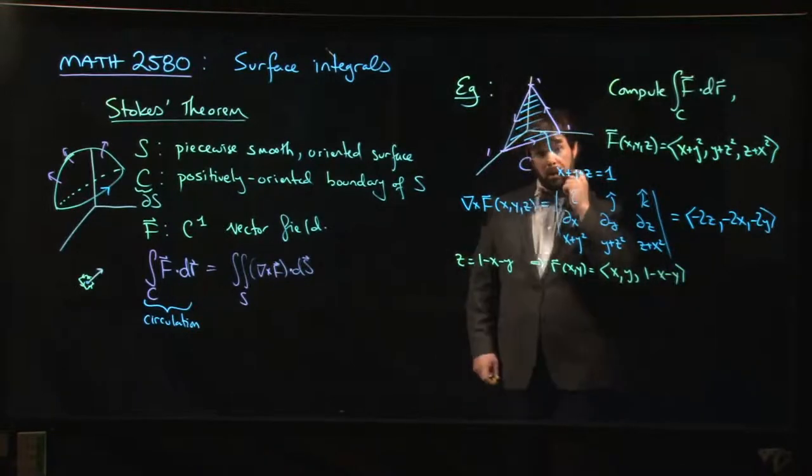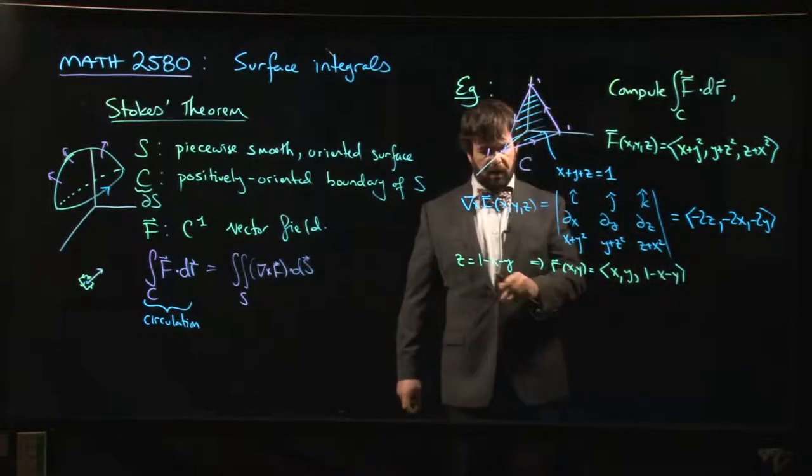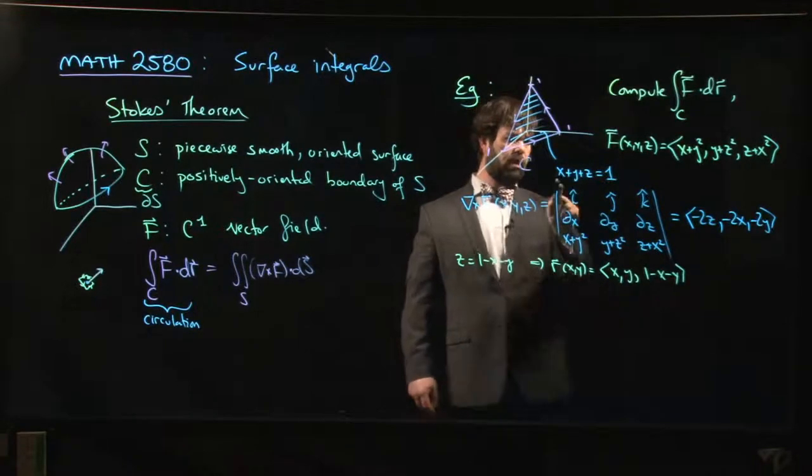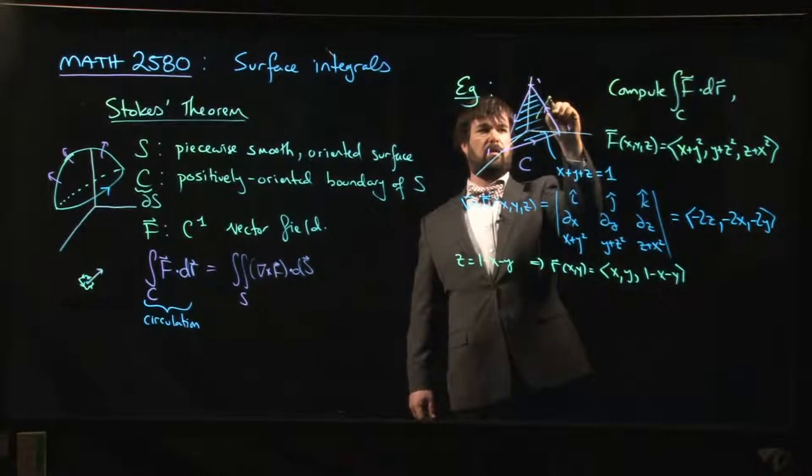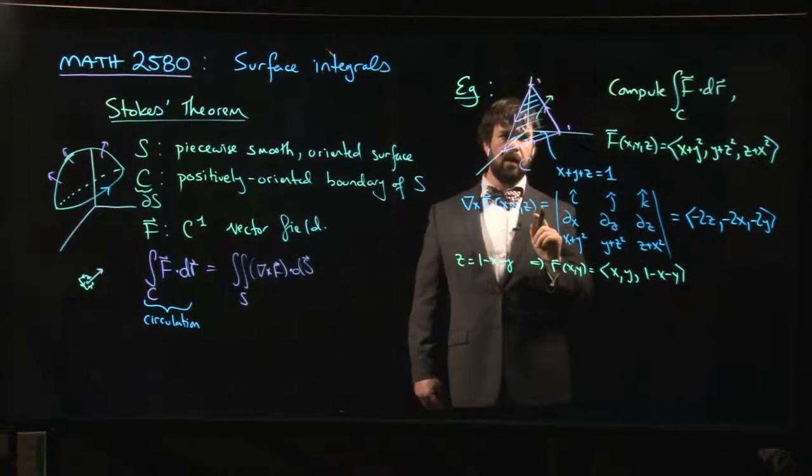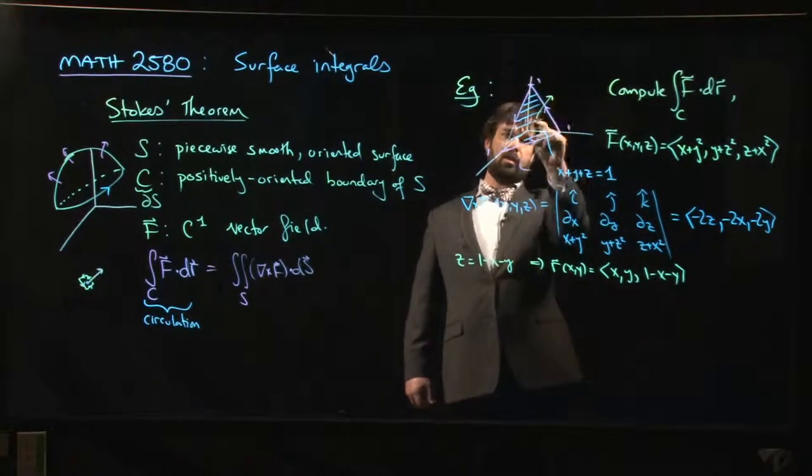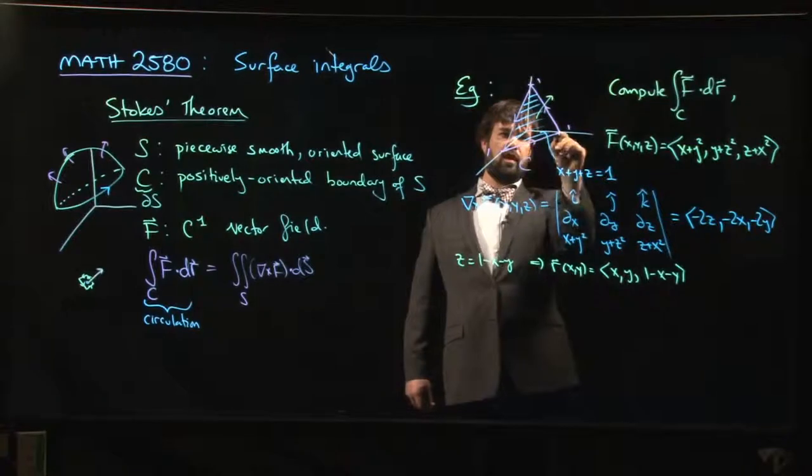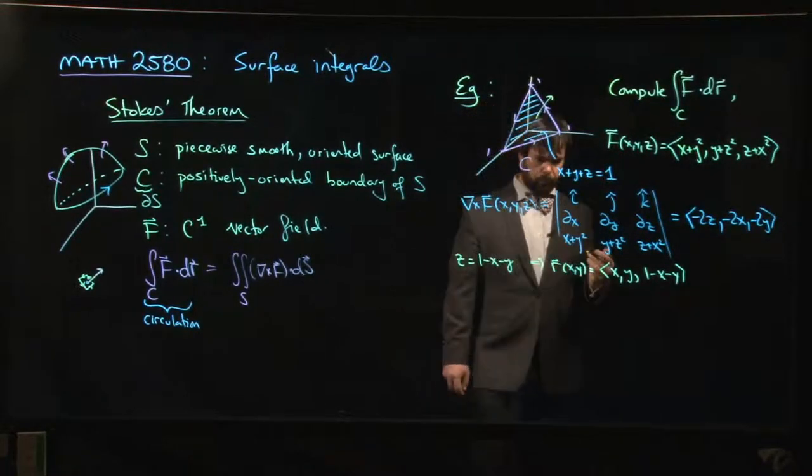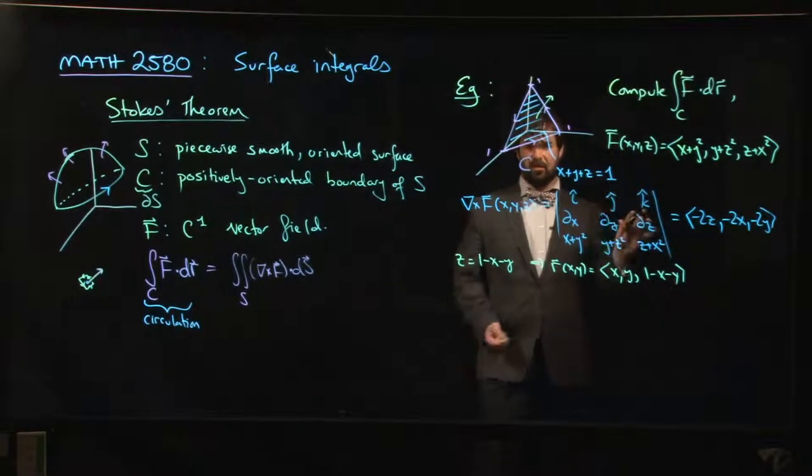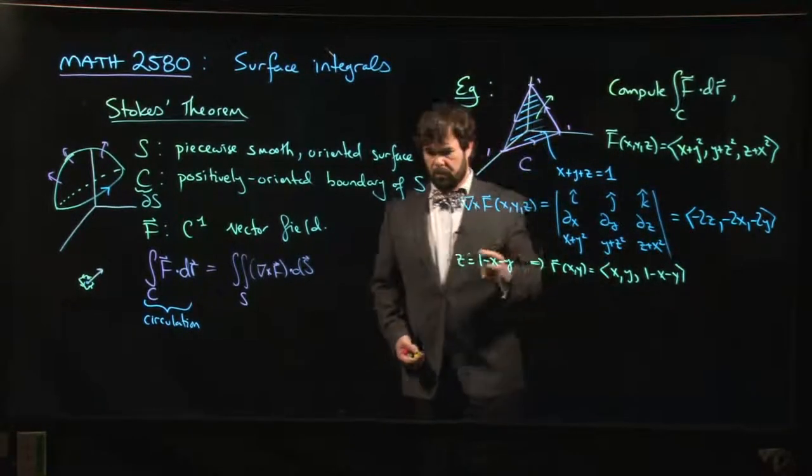Now one of the things we want to do is—because we've chosen a parameterization, we know the normal vector is (1,1,1), and that's pointing out this way, and that is the correct normal. We want this upward orientation, which will give us the positively oriented boundary going around. We've got to check and make sure we have the right orientation.